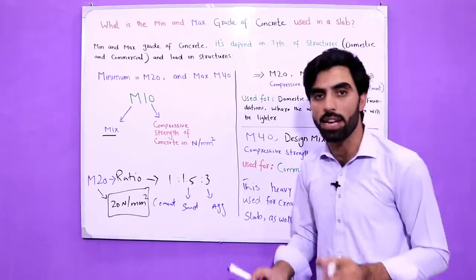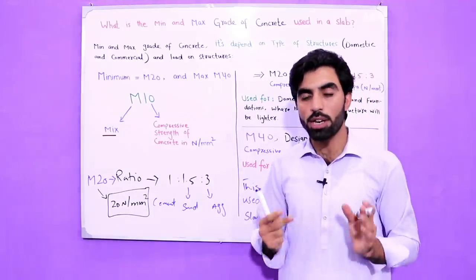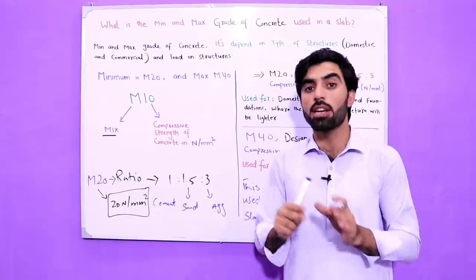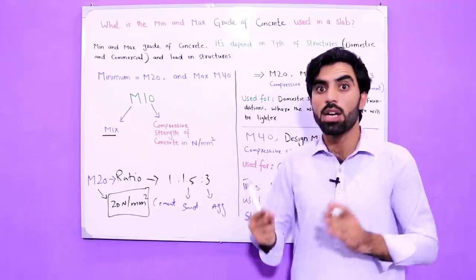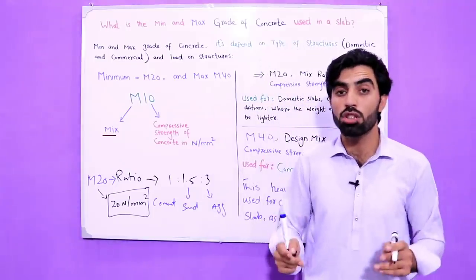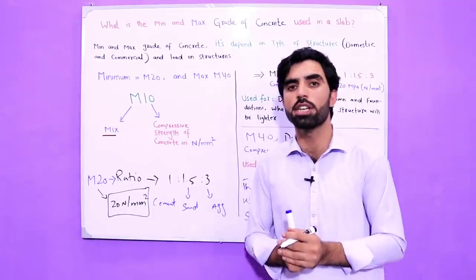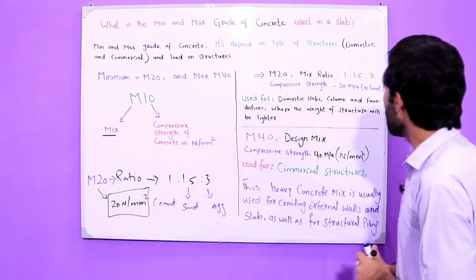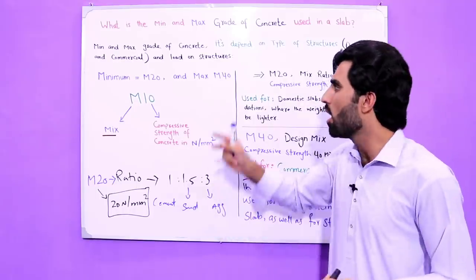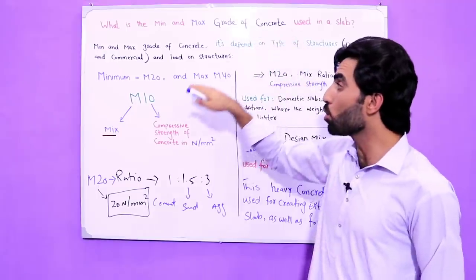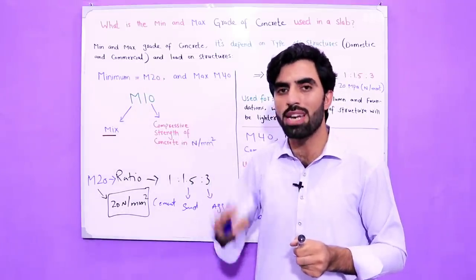This compressive strength of 20 Newton per mm squared is achieved after 28 days. We put a cube of size 15cm × 15cm × 15cm in a compression machine and apply load at 7 days, 14 days, 21 days, and the standard strength is measured at 28 days. For RCC slabs, the minimum grade should be M20 — you should not use anything less than M20, such as M15.